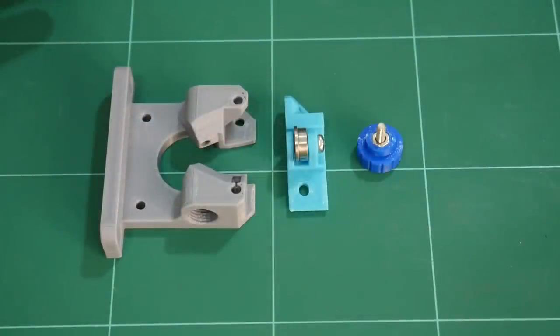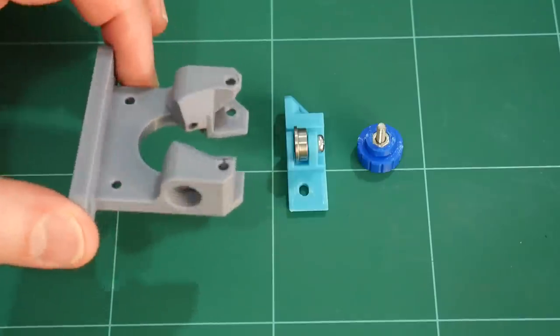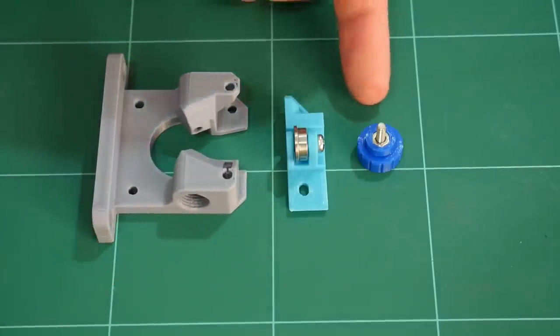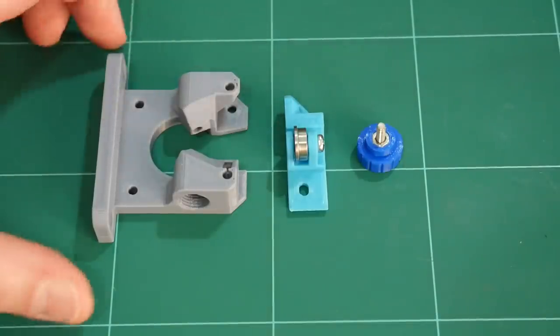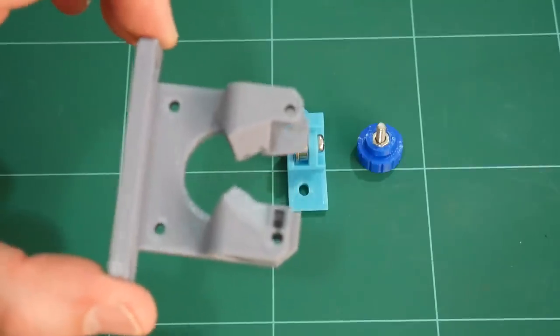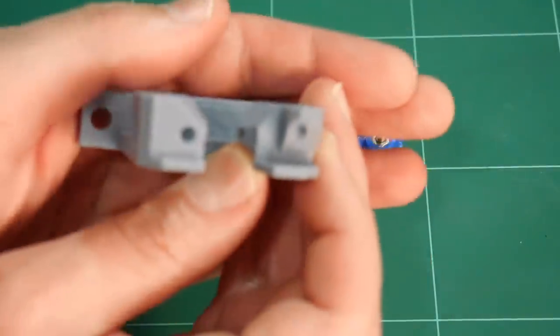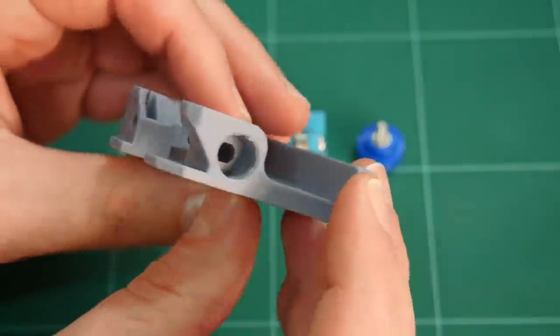All these pieces were printed at a 0.2mm layer height, with three perimeters, three top and bottom layers and a 50% infill. The idler and the Bowden knob are quite easy to print, and they'll be quite fast to print because they're quite small pieces. But for the actual motor mount itself, there are a few areas where there are overhangs, so you will need to use a part cooling fan to ensure that the overhangs print correctly.